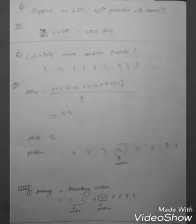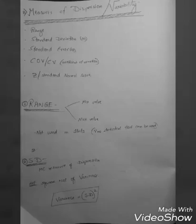8, 2, 6, 1, 4, 2, 9, 2, 5. So what is the mean? I will add the different numbers and divide by 9. What is the mode? 2 because it is occurring twice and median. I am arranging the different numbers in ascending order and the middle one is 4. So that is the median.